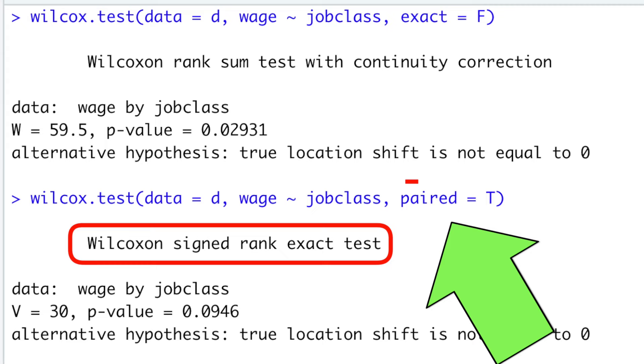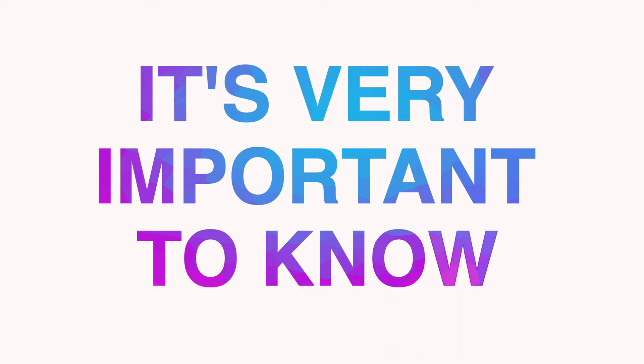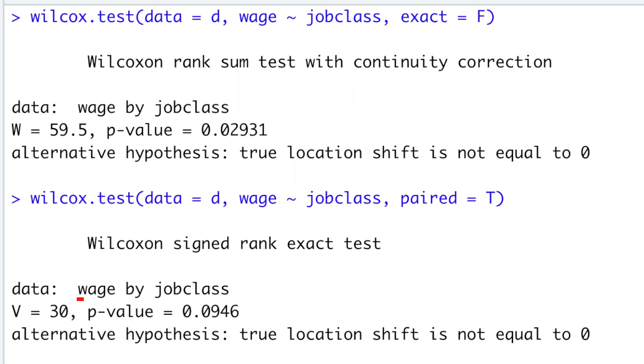People often say they use Wilcoxon test, but when I ask which of both they mean, they mostly don't know. But it's very important to know, because otherwise, as the p-value shows, we can get a completely opposite result.